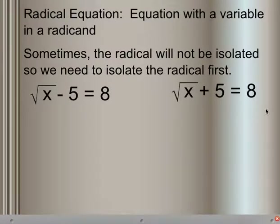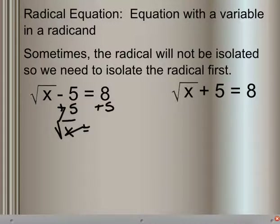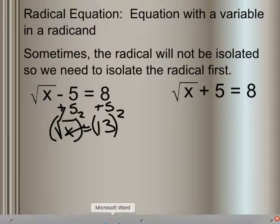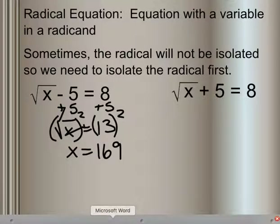Here are some good examples. I need to get that square root of x by itself, because if I were to square both sides right now, I would still end up with a radical somewhere. So I need to add 5 to each side and get the square root of x is equal to 13, so that we can square each side and end up with x is equal to 169.